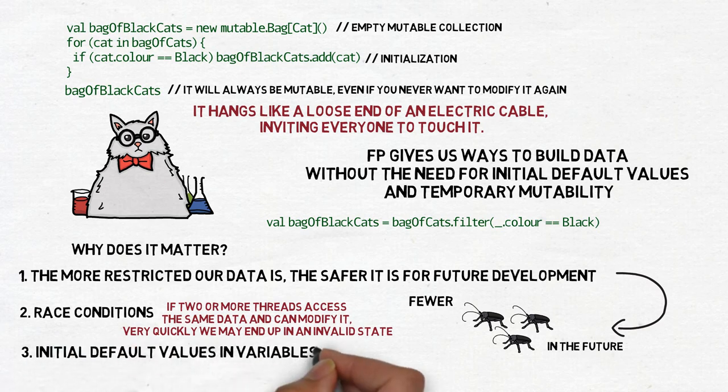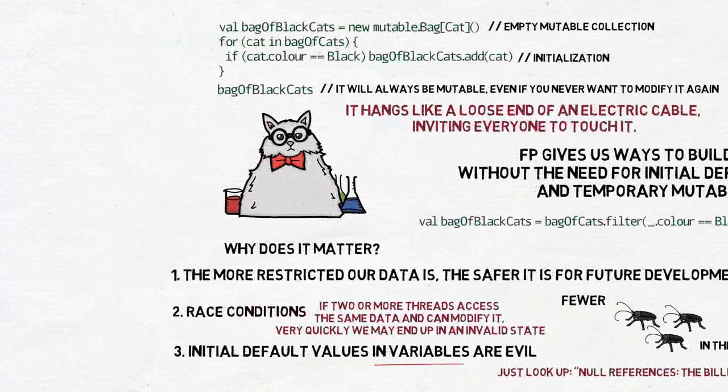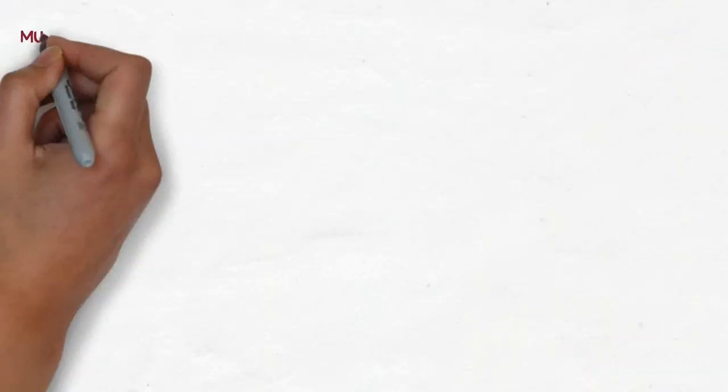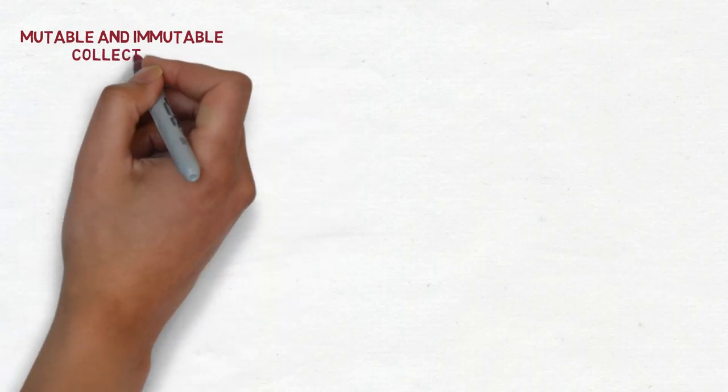Third, initial default values in variables are evil. All the time programmers use them and then forgot to change them to something meaningful. They are the source of a lot of bugs, especially the infamous null reference. The concept of immutability gets a bit more complicated when we talk about data structures and in particular, collections.